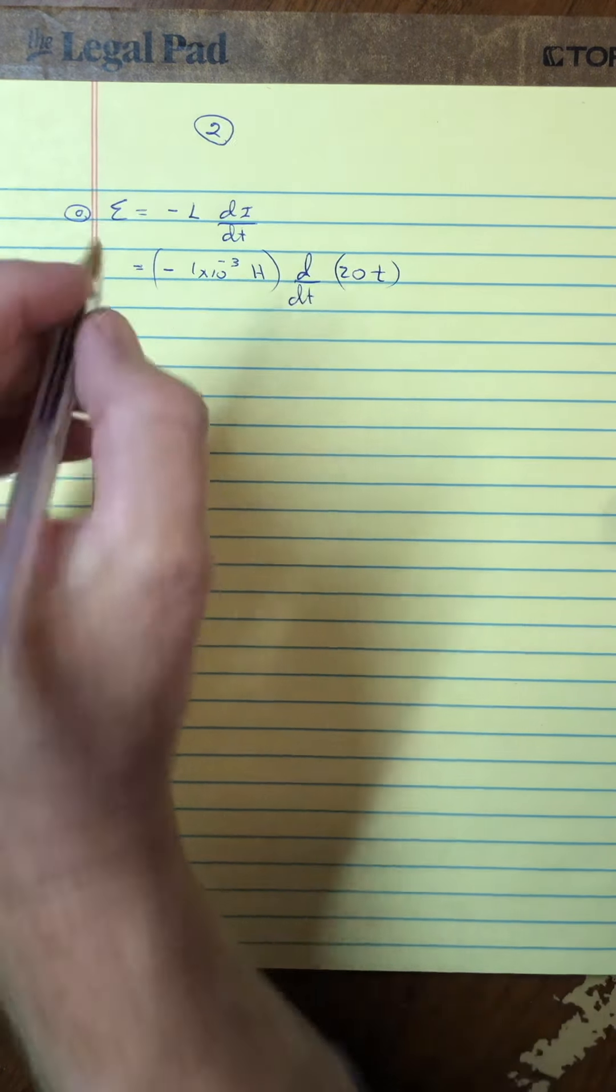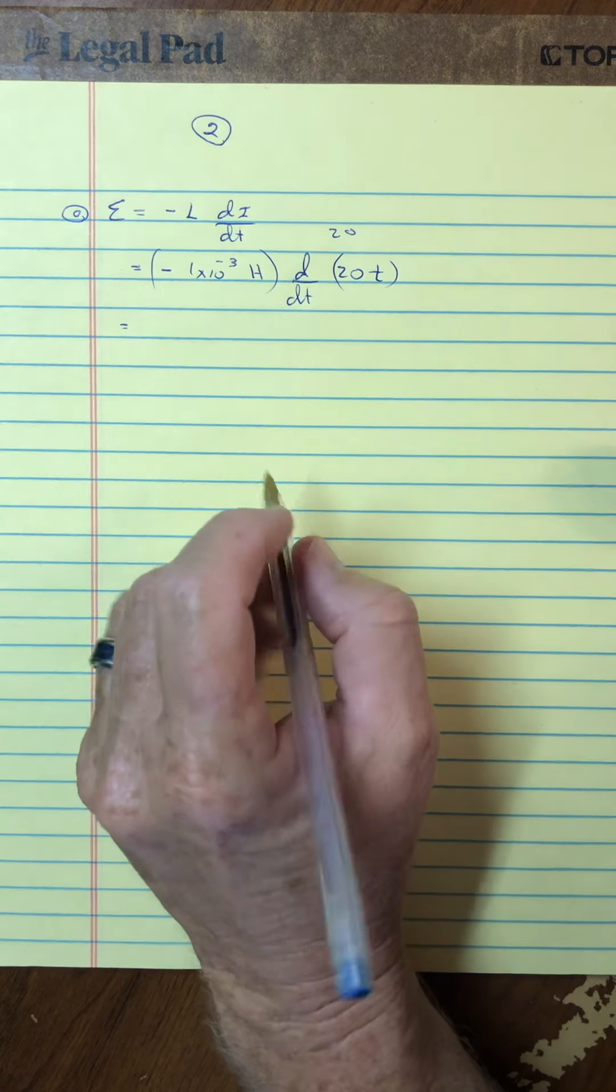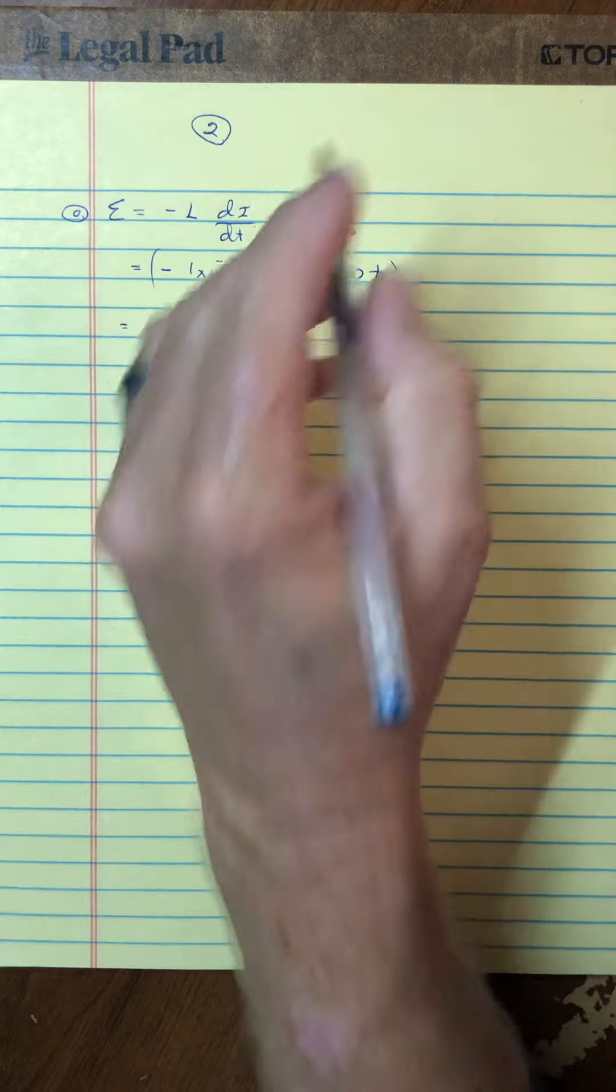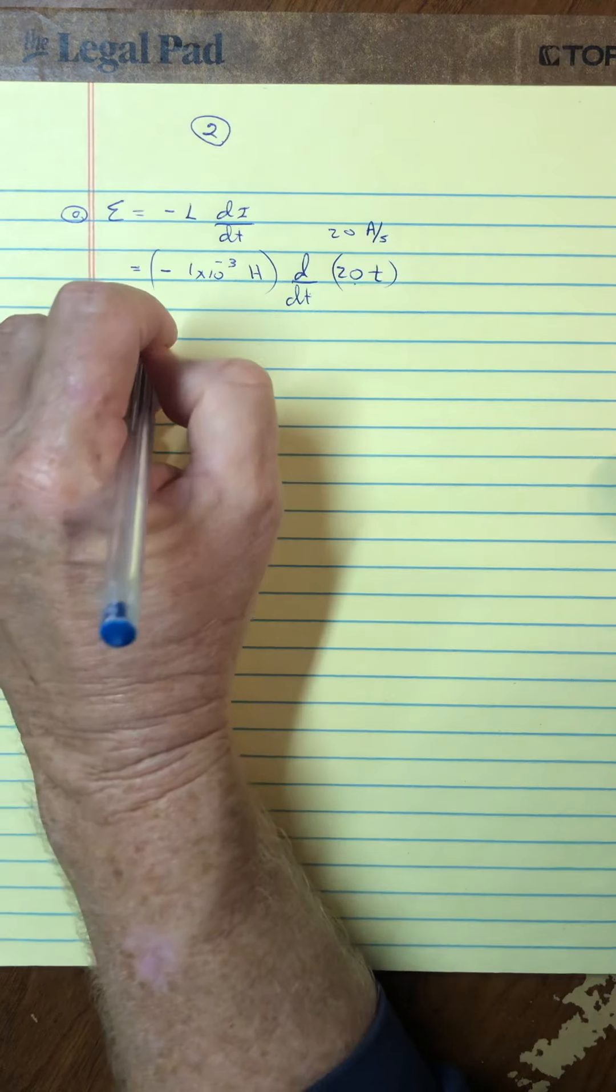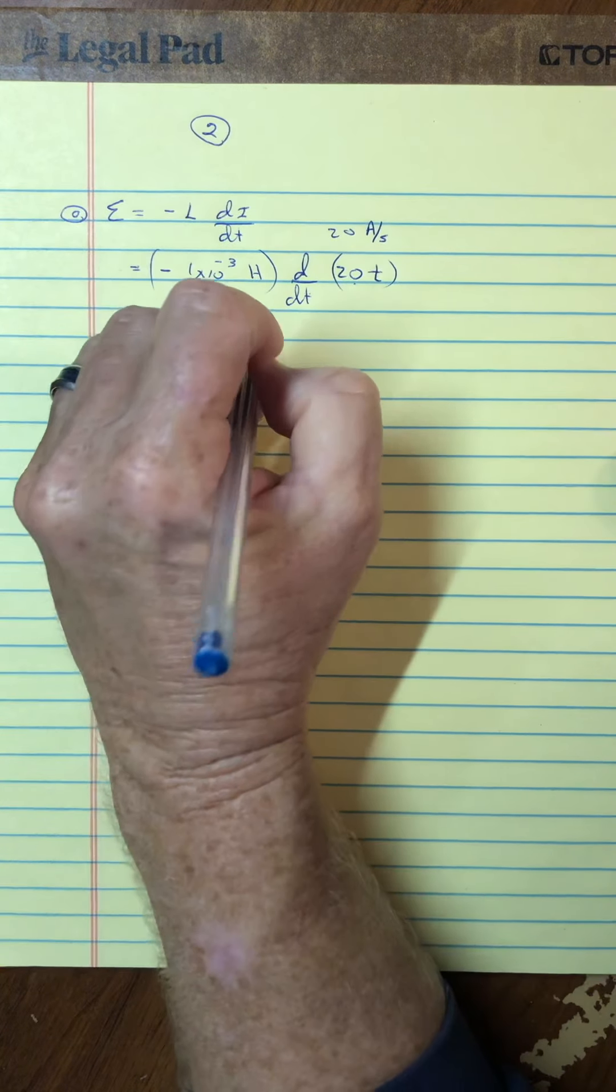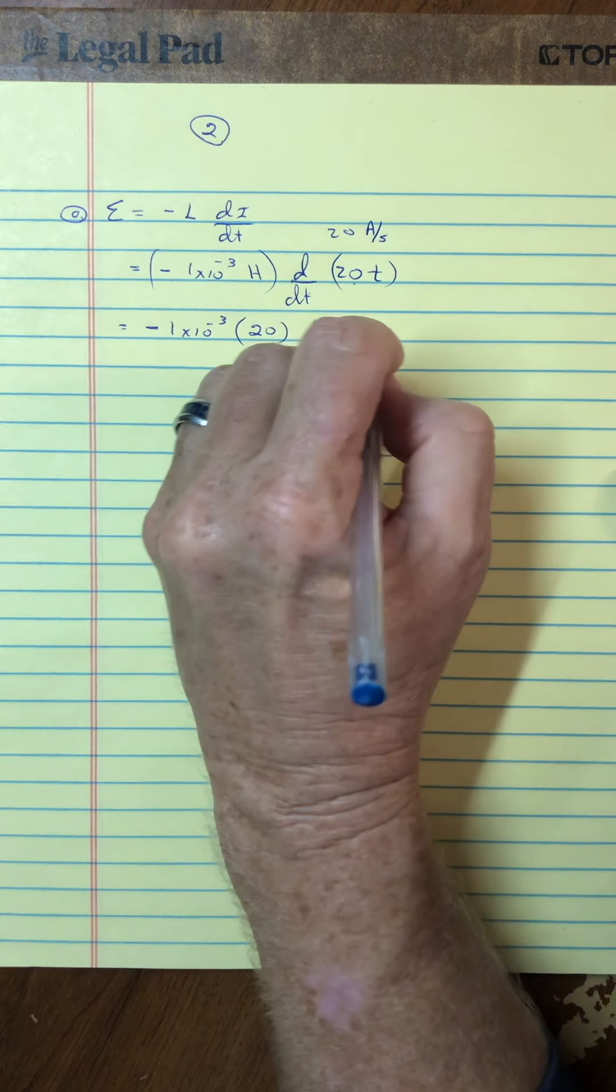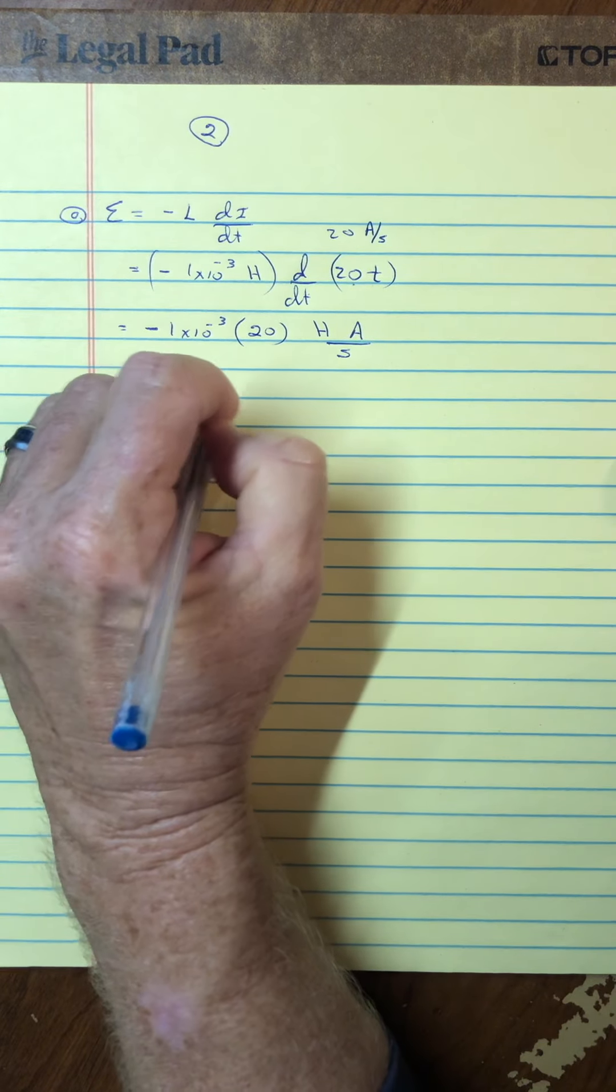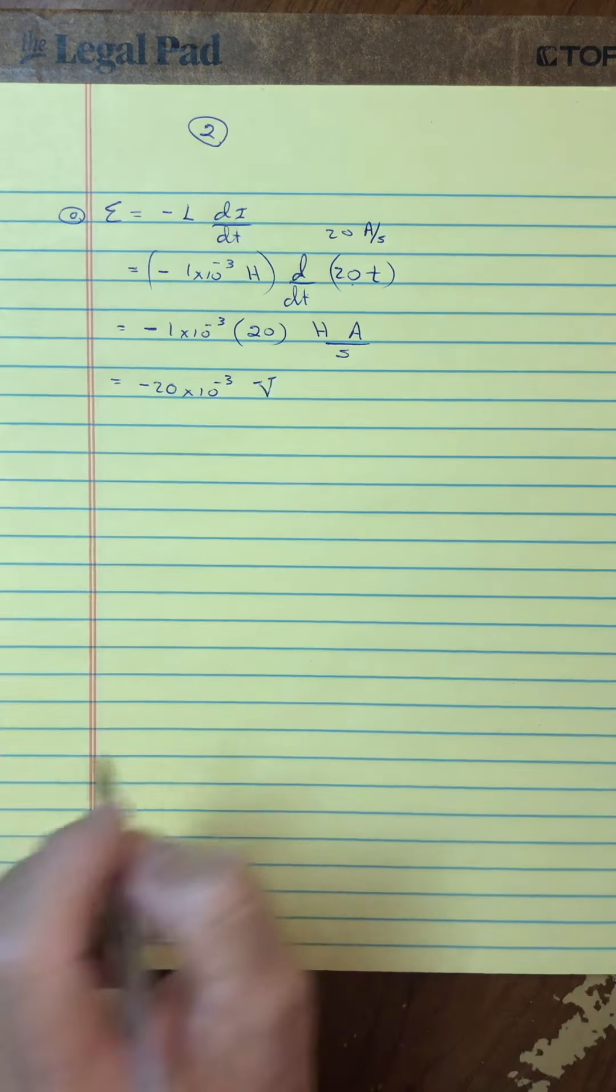And so, that makes a fairly easy derivative. You take the derivative of this, you get 20. Now, maybe I should watch my units here. This would be amps per second. So, this is 20 amps per second. And so, I'm going to have 1 times 10 to the negative 3, multiplied then by the 20. That's the numbers. And then I get a Henry times an amp over a second. And when you multiply that, you get negative 20 times 10 to the minus 3. And this does come out to be volts.